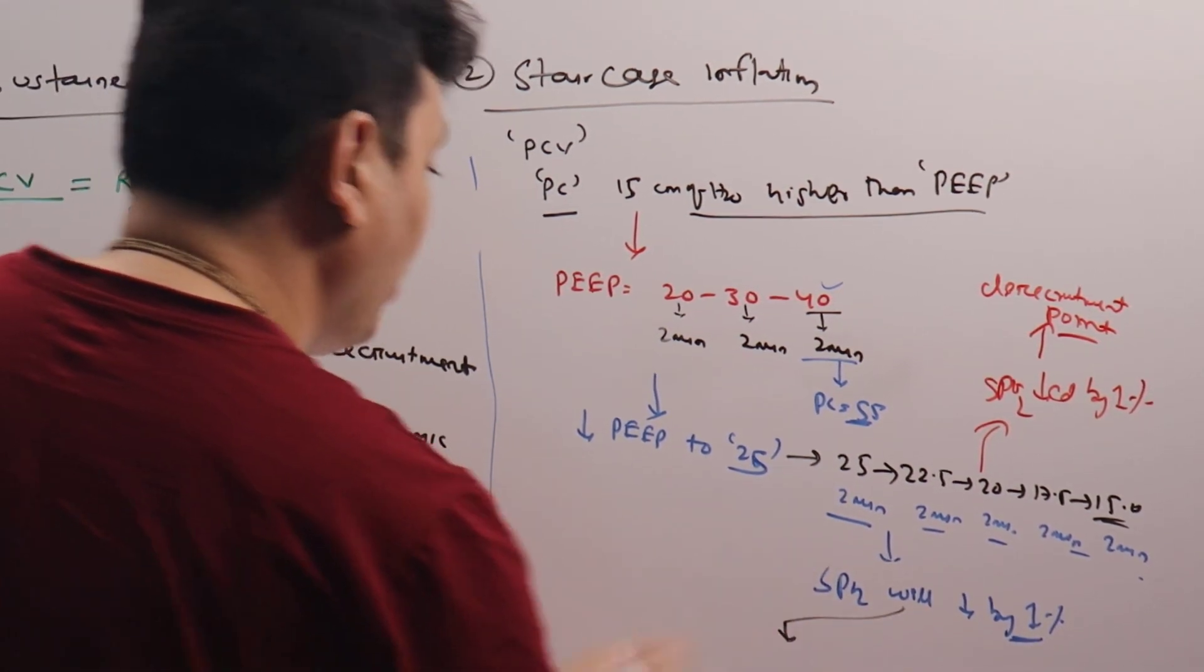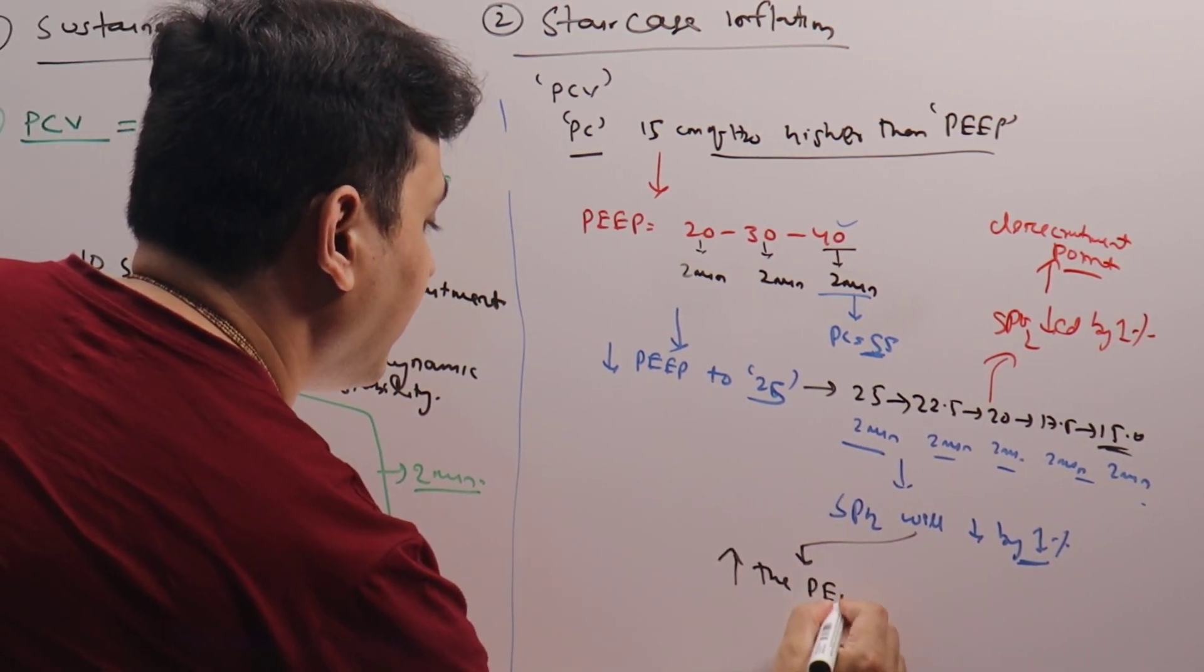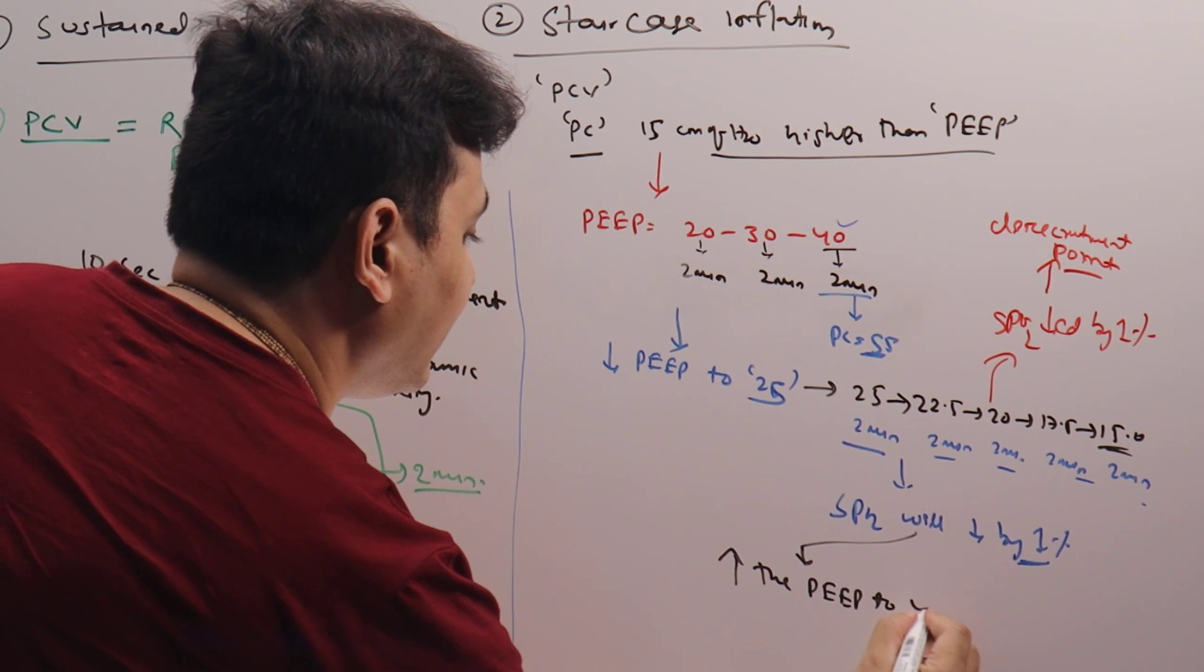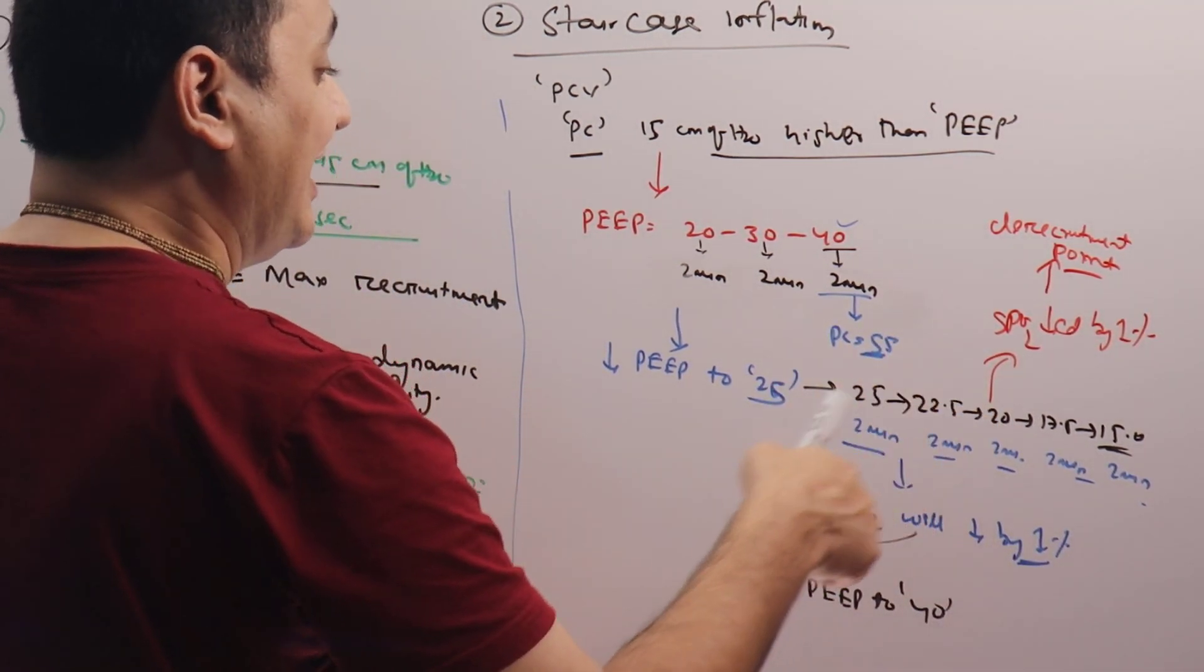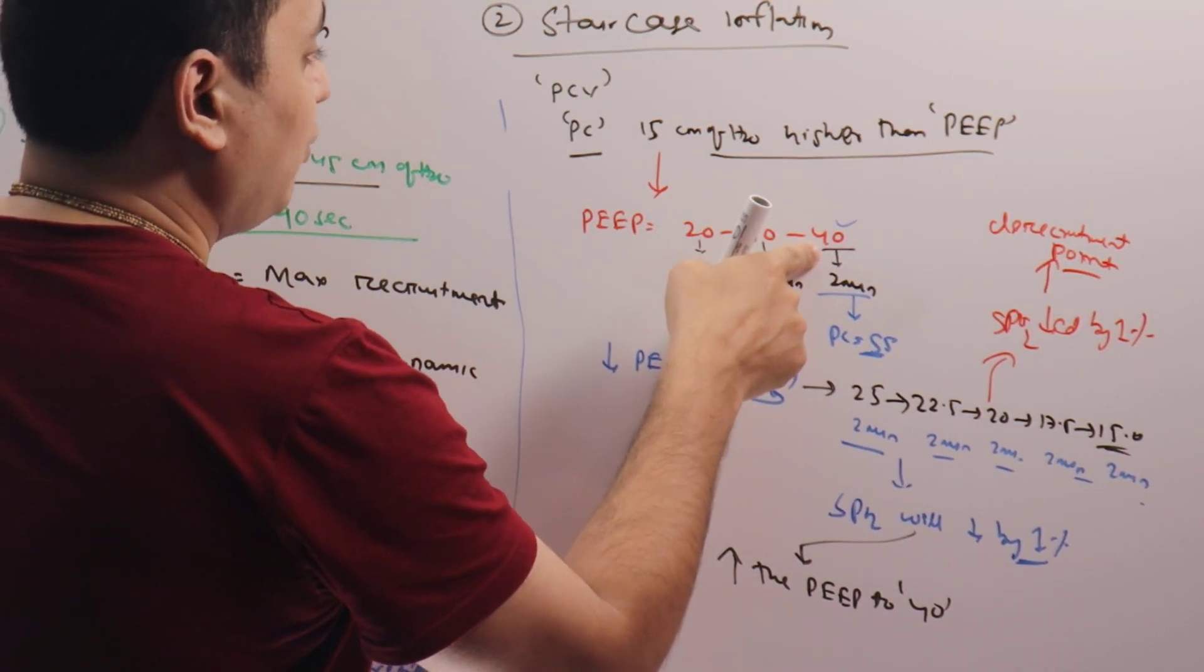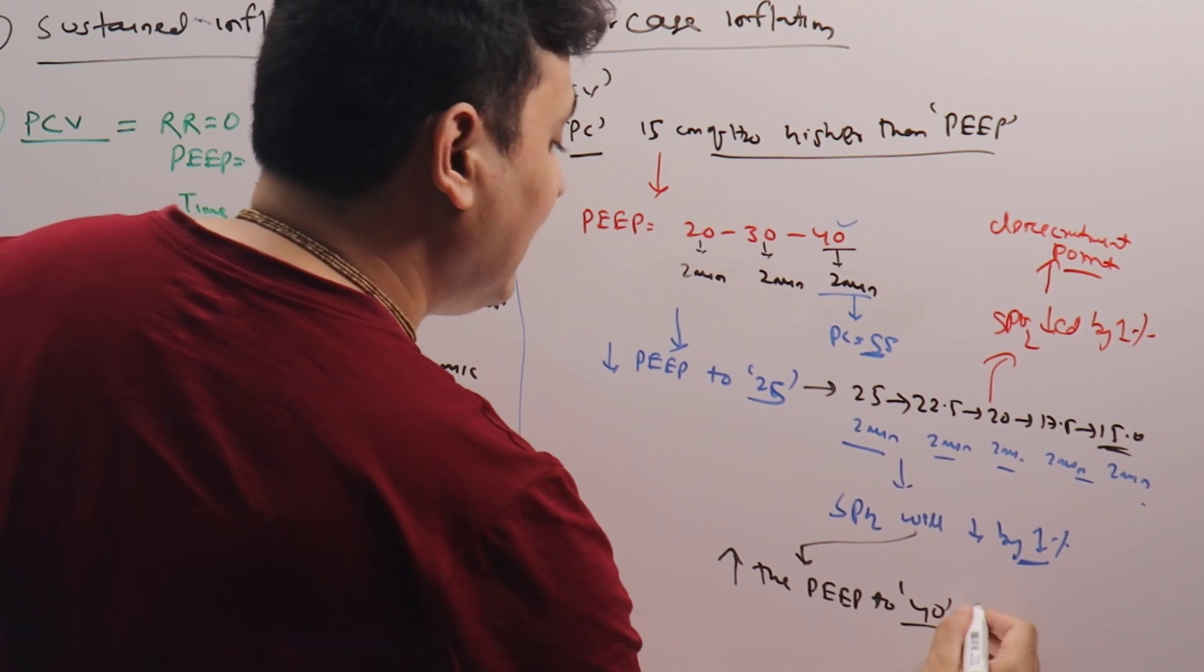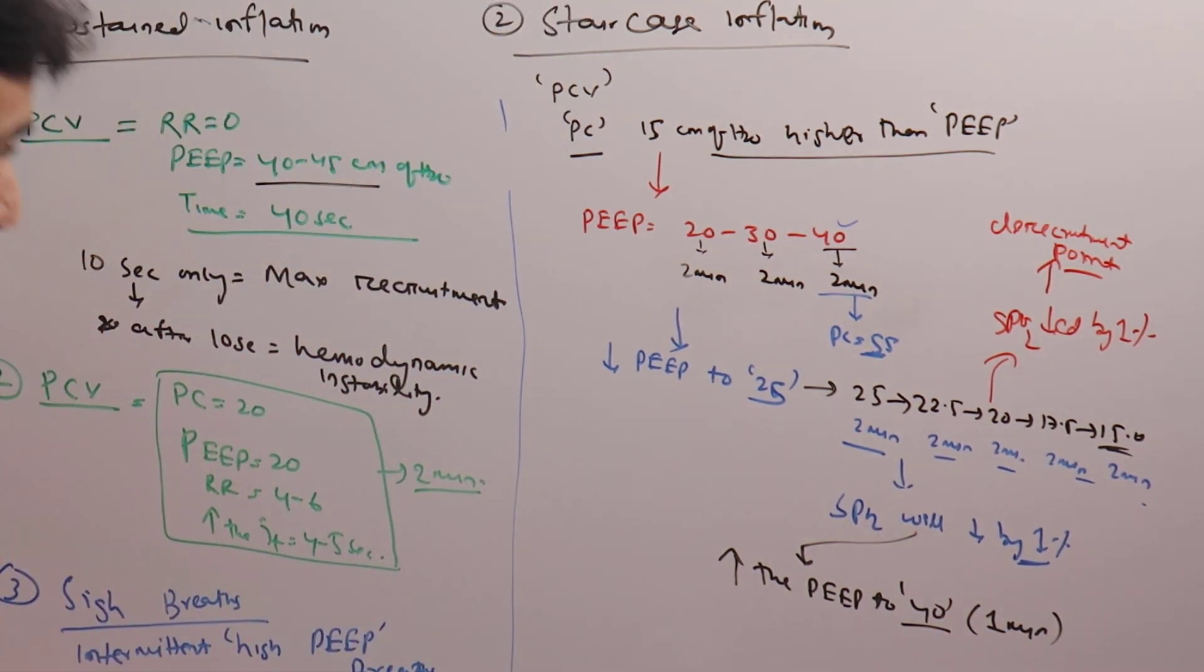So now what to do? Again we have to increase the PEEP to 40, because while decreasing at this point we have derecruited the lung. So we have to once again recruit the lung. Again bring the PEEP to 40 and keep for 1 minute, so again it will be recruited.